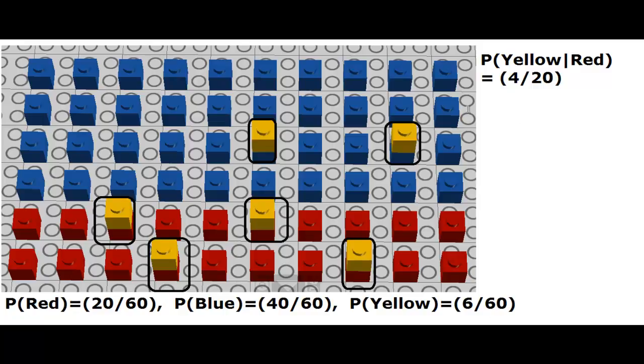And what did we want to obtain here? We wanted to obtain the probability that the color is red, given that we have a yellow brick, exactly like the reverse of this event. So in this case, what do we get? We have 6 yellow bricks, and out of 6, how many are red? 4 of them are red.